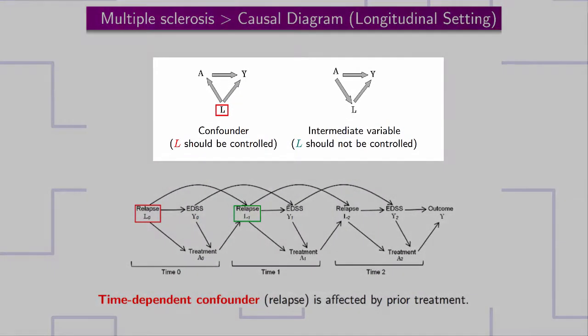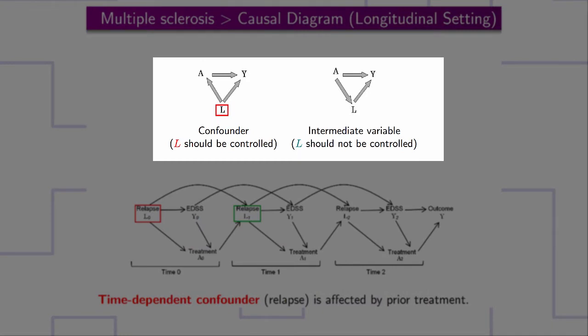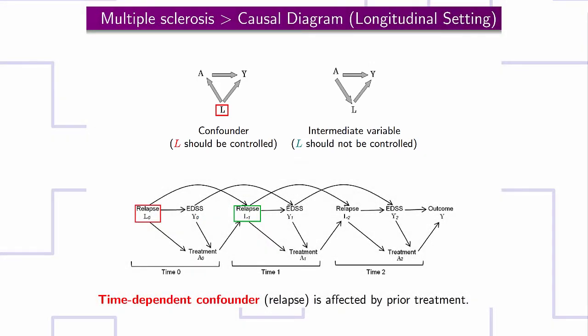So far, we have discussed point treatment setting where we control the list of confounders L. This can be easily done by using propensity scores no matter how many confounders we have. However, in longitudinal studies, sometimes confounders are also affected by the previous treatment. Such variables act as confounders and intermediate variables at the same time. In epidemiology, they are commonly referred as time-dependent confounders.